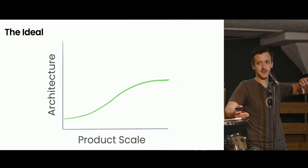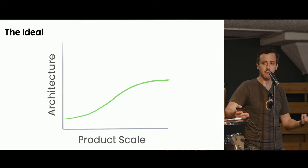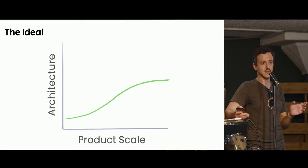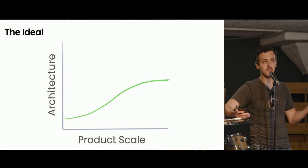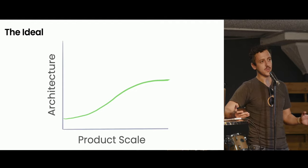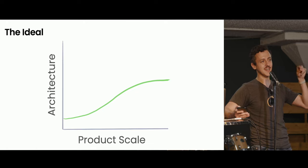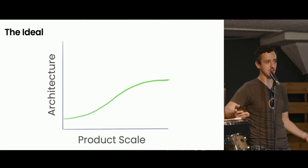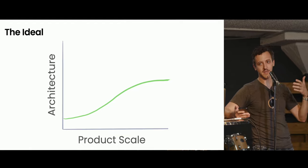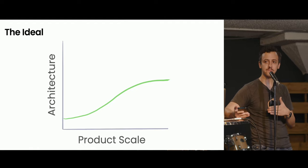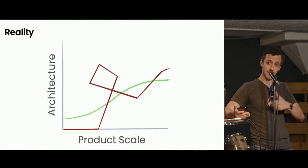What this chart shows is: on the vertical axis you have architecture — the level of architecture applied to your software system — and on the horizontal axis is the scale of your system, which might be number of developers, number of users, lines of code, or some combination. The chart implies that for any given product scale there is an ideal level of architecture. If you're above the line you're over-architecting; if you're below the line you don't have enough structure.